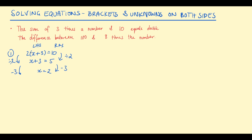Now let's do this problem the other way by expanding the brackets first. Expanding gives 2x plus 6 equal to 10, then subtract 6 from both sides. 2x plus 6 take 6 is just 2x, and 10 take 6 is 4. Then divide by 2 to get x by itself: 2x divided by 2 is x, and 4 divided by 2 is 2.